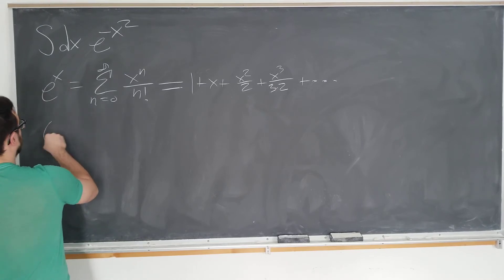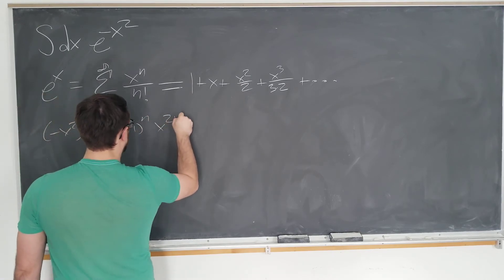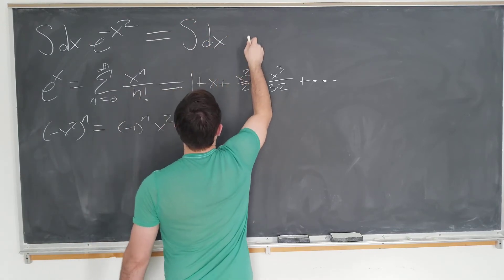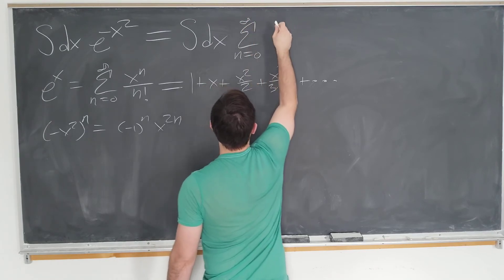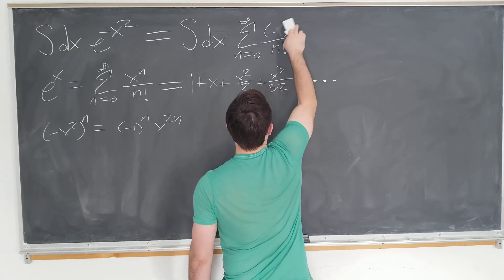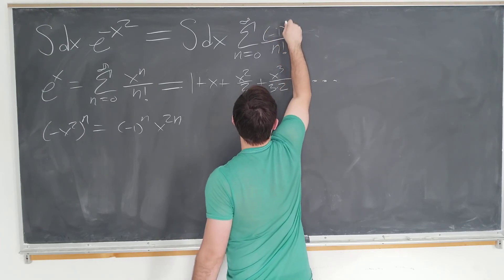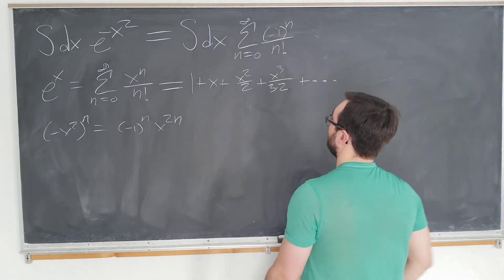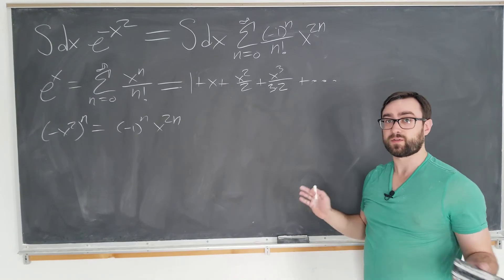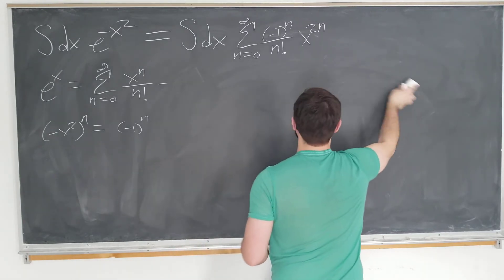So if we have minus x squared to the nth power which is going to be minus 1 to the n x to the 2n we plug that into the formula up there. It's going to be the integral with respect to x of the sum as n goes from zero to infinity minus 1 to the n over n factorial. Sorry that's a horrible looking bracket. Minus 1 to the n over n factorial and now the part about x, x to the 2n. Now many of my viewers know what the next step is. We're simply going to interchange the order of the sum and the integral.